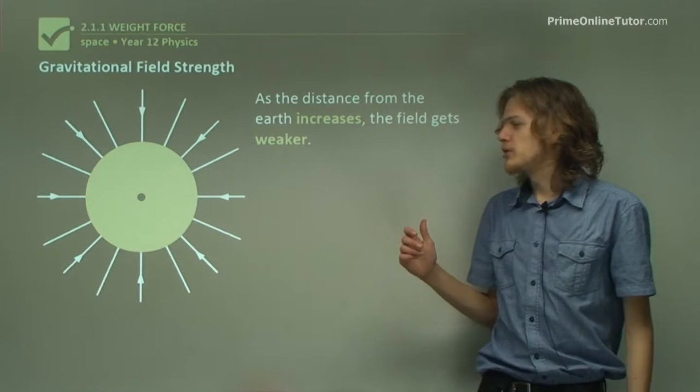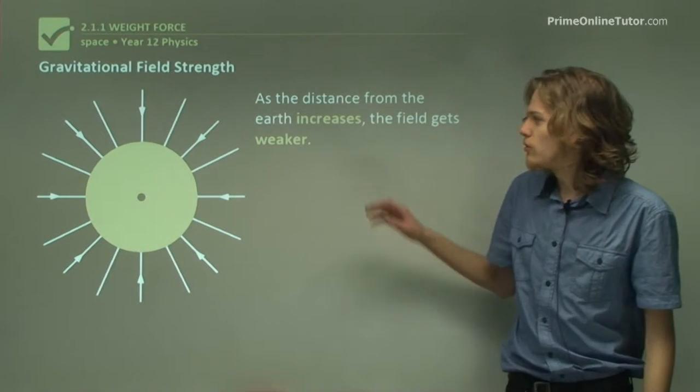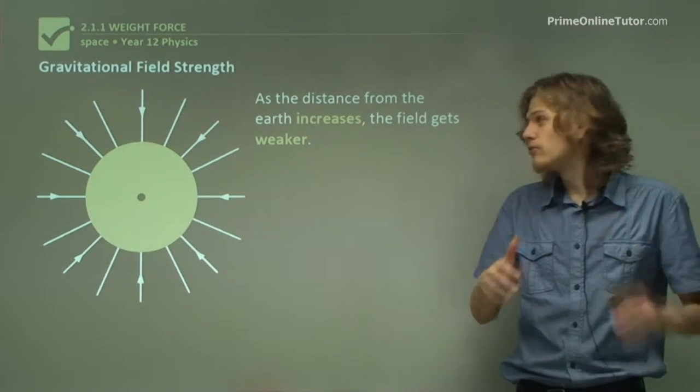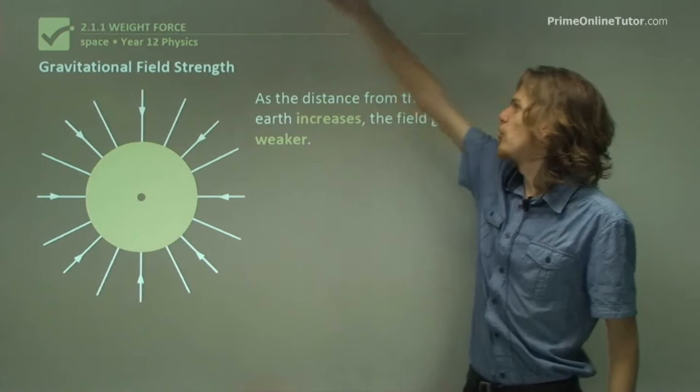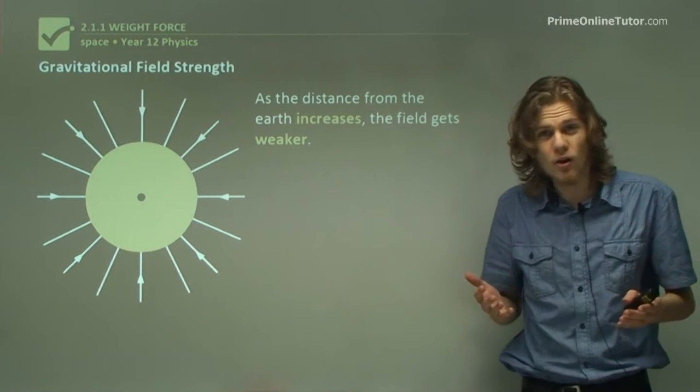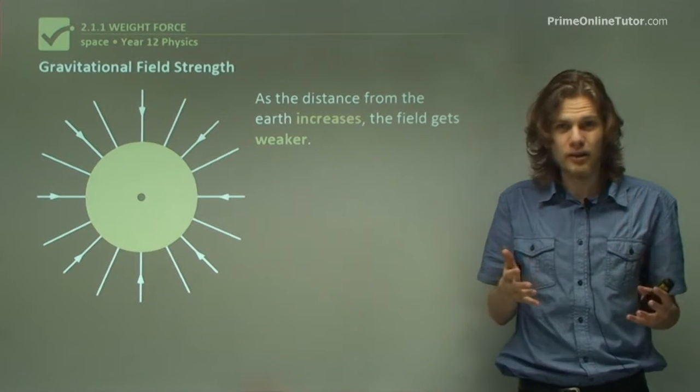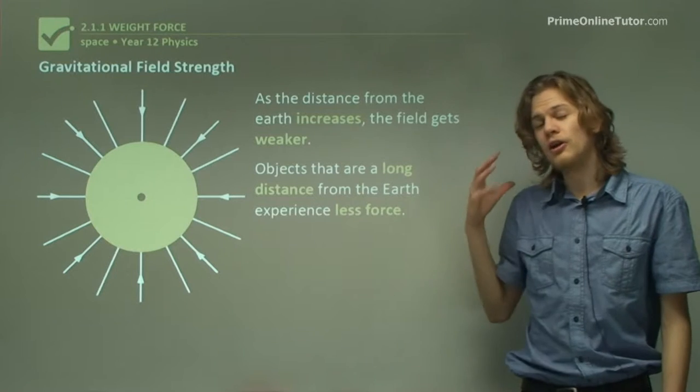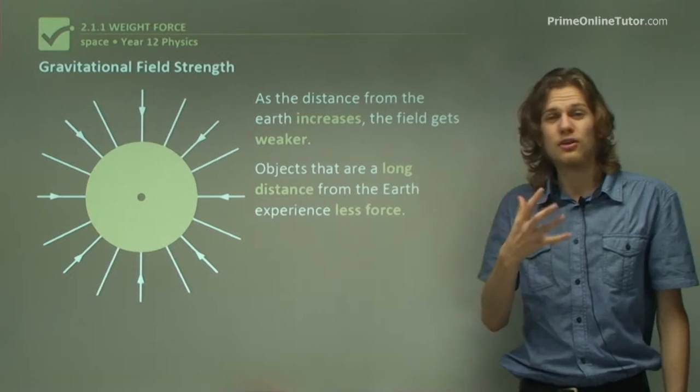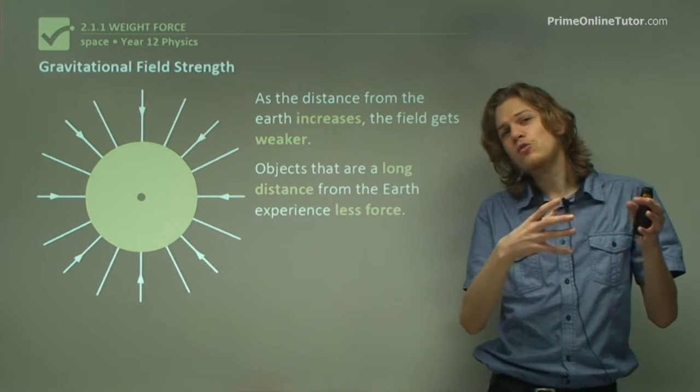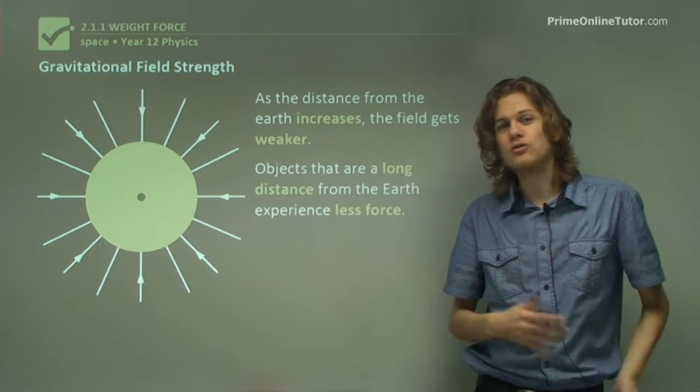As the distance from the Earth increases, the field gets weaker. We can see that the field lines close to the surface are a lot closer together than the field lines that would be out here or something. That means that as you go further away from the Earth, its gravitational field gets weaker. So objects that are very, very long distance from the Earth will experience less force. In the equation F equals mg, g will be a much smaller number than it is on the surface.